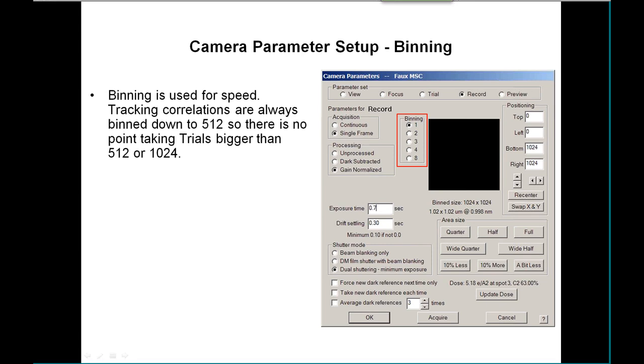In addition, internally the program will bin data in order to do computations faster. The tracking correlations are almost always binned down to a size of 512 pixels. So in one sense, there's no point in taking trial images that are used for tracking that are any bigger than 512. 1024 is fine because it's going to look better if you have a fast enough camera.